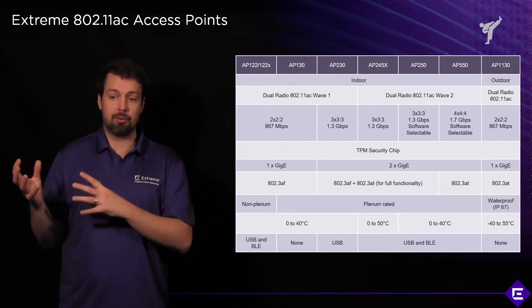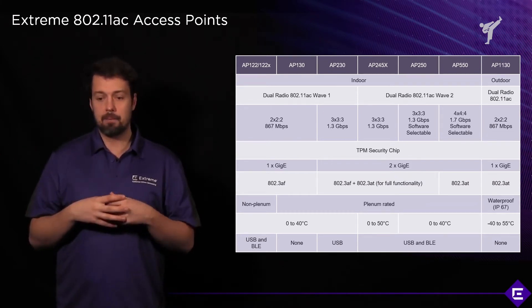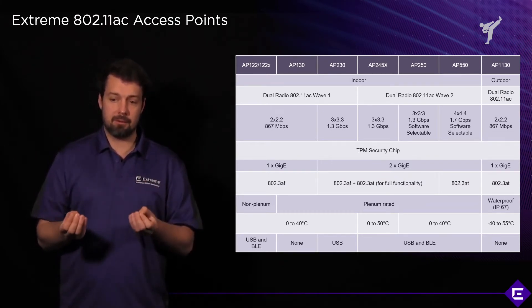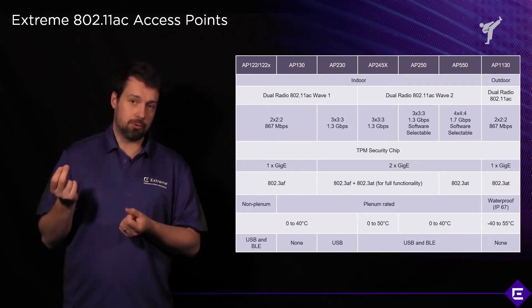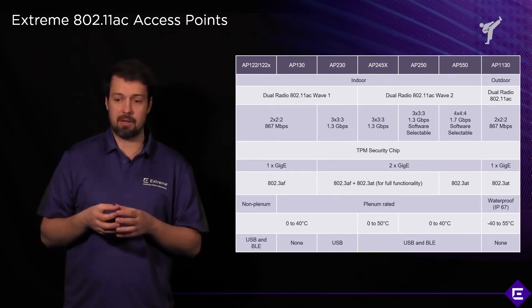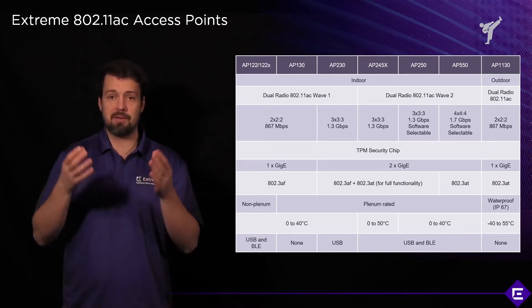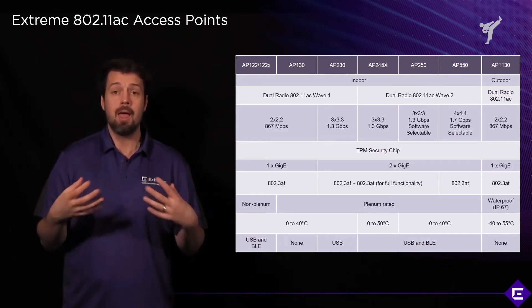Finally, the outdoor alternative is the AP1130, a 2x2 through 2. A lot of customers ask why it isn't a 3x3 or a 4x4.